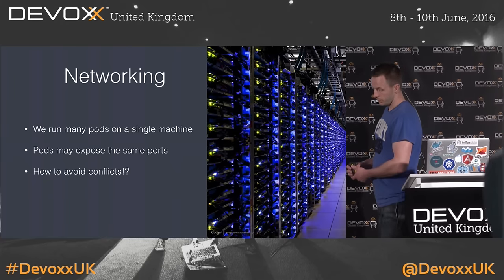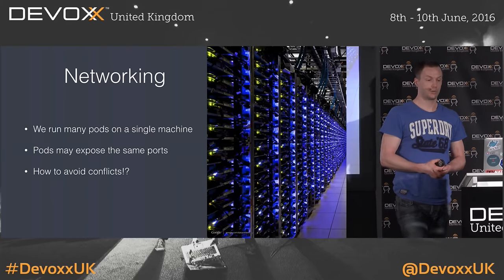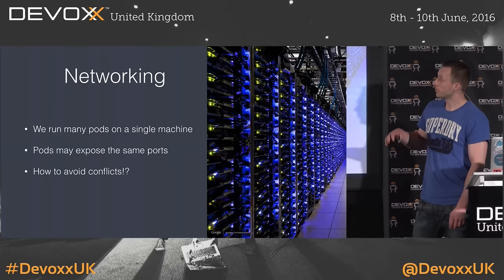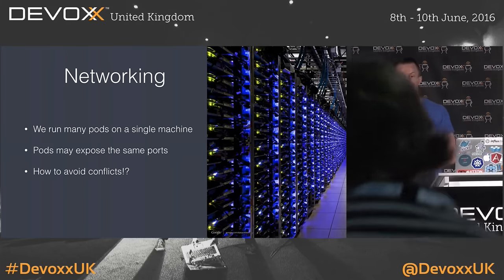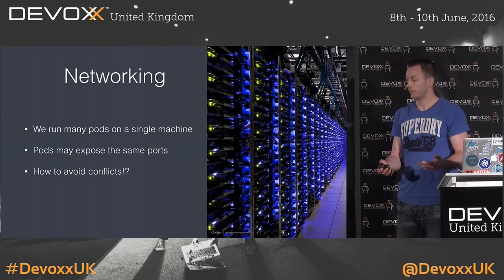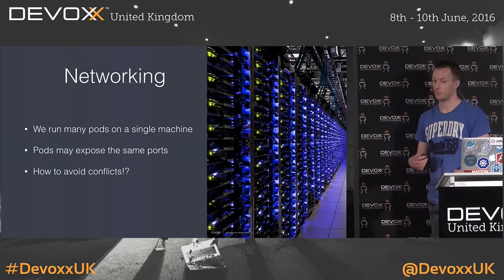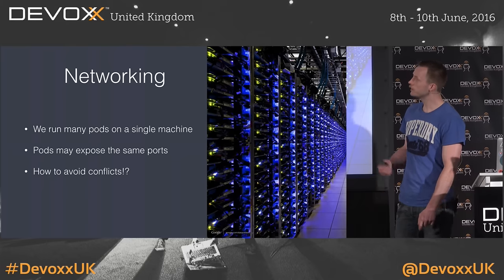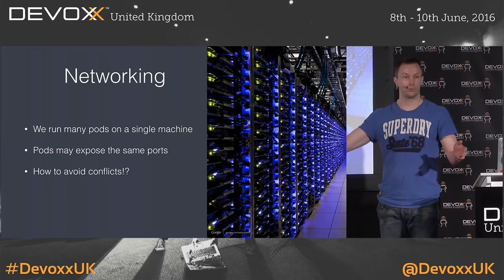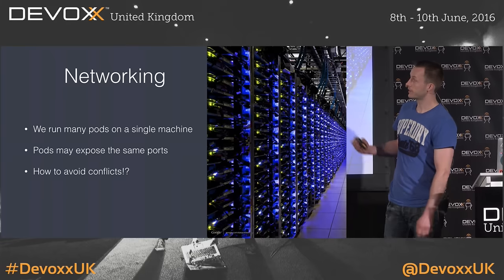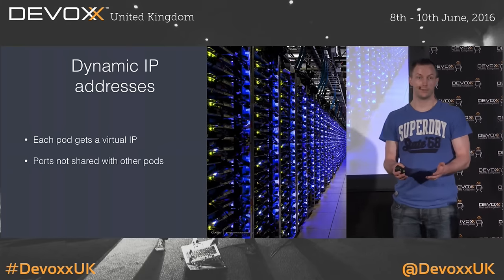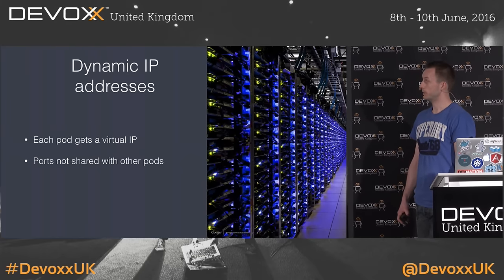Another thing that we get with a pod is networking. If you run many containers on a single physical machine and all those containers want to use some ports — say we have three Java applications and they all want to use port 8080 — you run into port conflicts and have to do all kinds of port mappings. Wouldn't it be nice if every container gets its own virtual IP address with access to all ports without ever thinking about port conflicts? That's exactly what Kubernetes does. Every time we start a pod, it gets a virtual IP address just for that single pod.